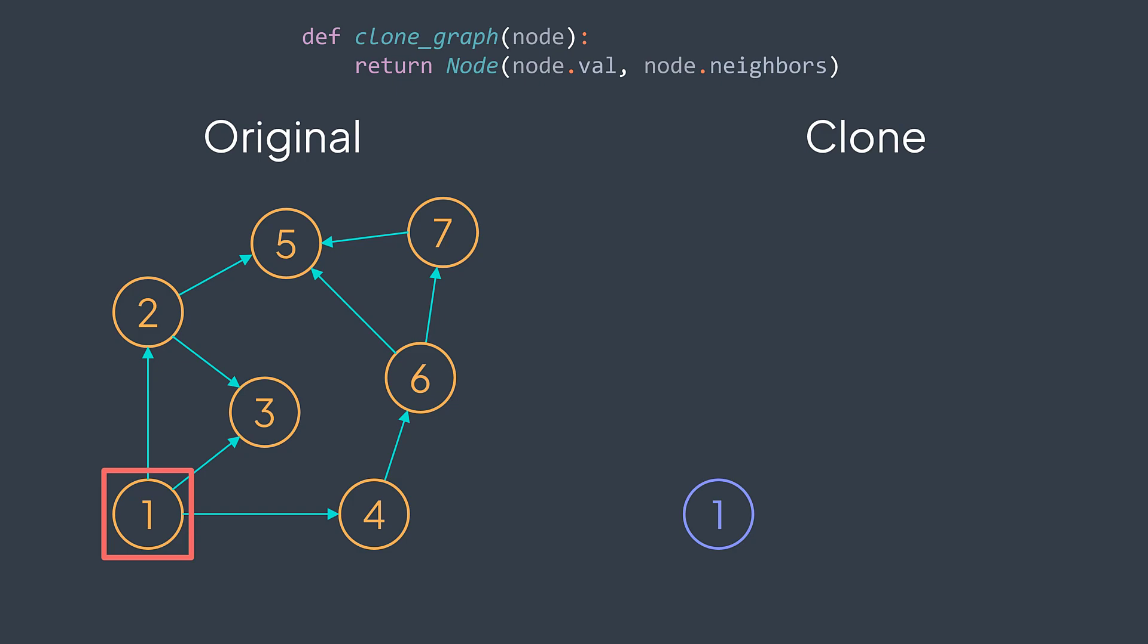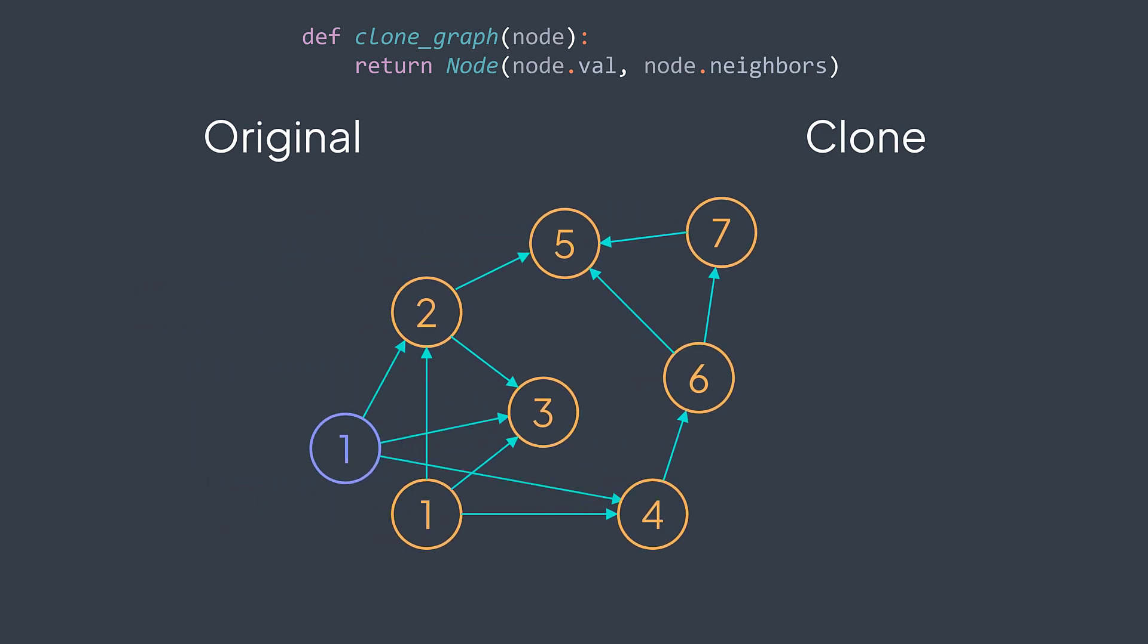But this solution doesn't work because what happened when we gave neighbors of the original one to the clone is that we just gave the references. So we didn't create new nodes. The clone node is pointing to the same nodes, which means that we didn't create a deep copy of the graph. We just copied the first node, not remaining ones.